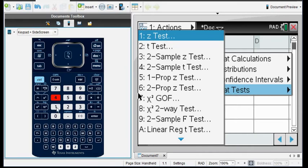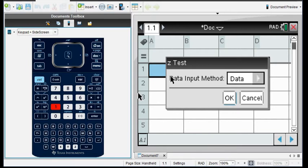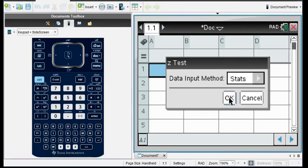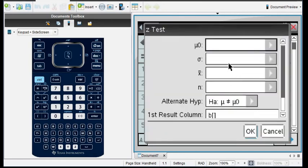And then I'm going to pick the correct test. In this case, we want the z-test. We would use data if we had information to actually plug into the spreadsheet, like if you had a bunch of information to plug into a list. Since we don't have that, we have the stats. We're going to choose stats here and click OK.